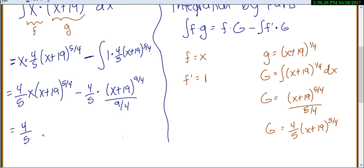So 4/5 x times (x plus 19) to the 5/4 minus 16/45 times (x plus 19) to the 9/4 plus c. Don't forget to always add in your plus c.